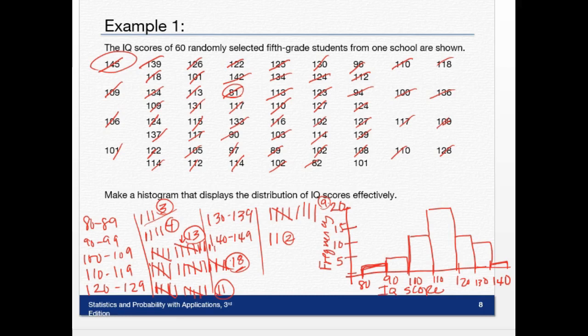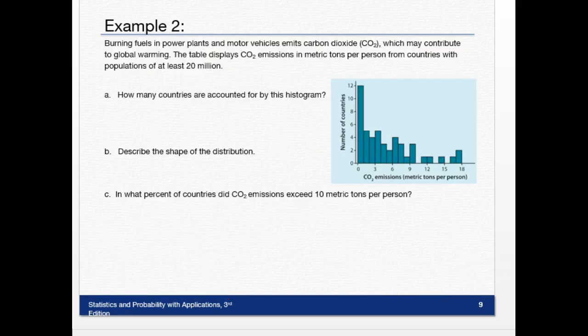So make sure you do that. Now, what do we do with this? Well, example 2 shows us a typical problem with histograms that's outside of just creating one. So you'll have to be able to create one, but you'll also have to be able to interpret. So here's a good interpretation problem.